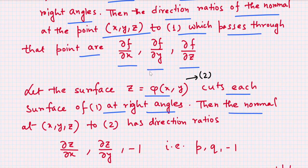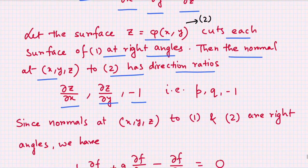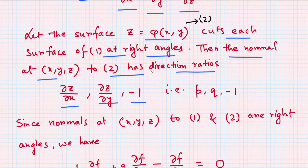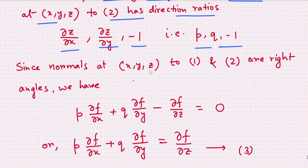Let z = φ(x,y) cut each surface of the first system at right angles. Since z is a function of x and y, we take the direction ratios of its normal as ∂z/∂x, ∂z/∂y, and −1, that is p, q, and −1.